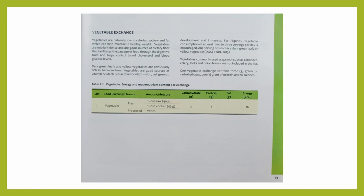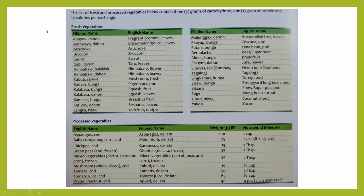For the vegetable group, as mentioned earlier, in the previous edition there are two groups of vegetables, but now there's only one group. Only vegetables that contain 16 calories per exchange were included in the vegetable exchange list. Meanwhile, vegetables with energy values below 16 calories per exchange are found in a separate table, and vegetable garnishes like coriander and leek are no longer included. This is the vegetable exchange list — fresh and processed vegetables that contain 3 grams of carbohydrates and 1 gram of protein and 16 calories per exchange. Also notably, the food exchange list now includes the Filipino name or common name of the food as well as the English name, which is one of the major additions of the 4th edition.